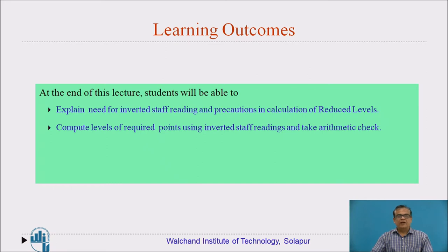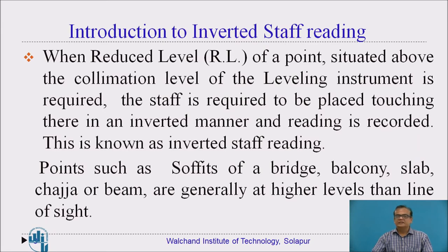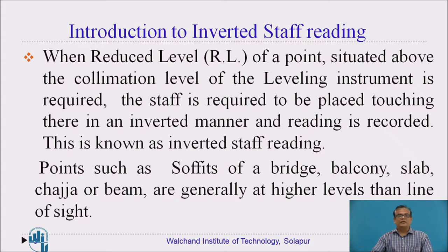Students will also be able to compute levels of required points using inverted staff readings and take arithmetic check. Introduction to inverted staff reading: when the reduced level of a point is required whose collimation plane level is at a higher position than the instrument position, then we have to go for inverted staff reading. The staff is kept inverted, and the bottom position of the staff is held touching to the point. This is called inverted staff reading.